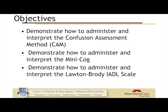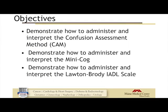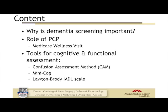The objectives today are to talk about three specific tests. The Confusion Assessment Method — which is not a screening test for dementia, but for delirium. When thinking about any change in cognition, we need to figure out whether it's acute or chronic, because timeline helps us determine the differential. We'll also discuss the Mini-COG, a five-minute screening test for dementia, and the Lawton-Brody scale to assess IADLs, both formally and informally.